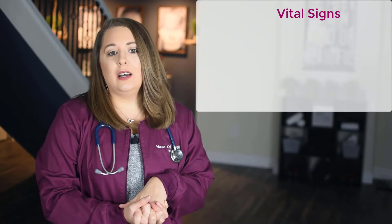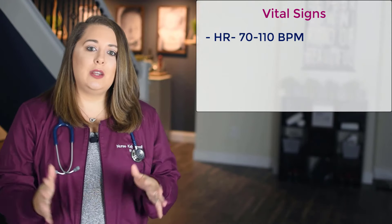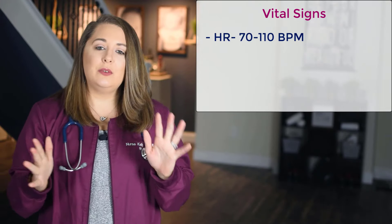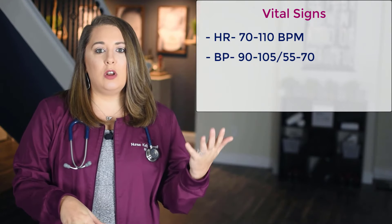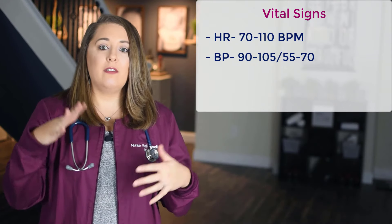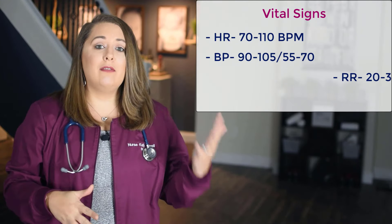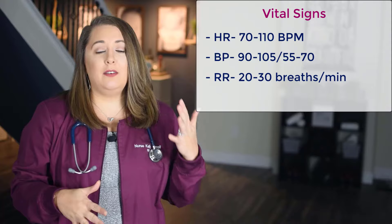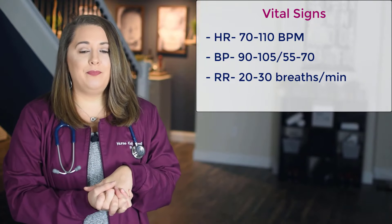Normal vital signs for toddlers: heart rate 70 to 110 beats per minute, blood pressure 90 to 105 over 55 to 70, and respiratory rate 20 to 30 breaths per minute.